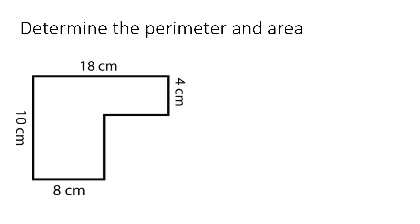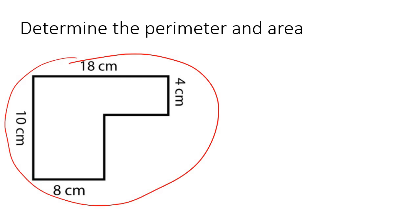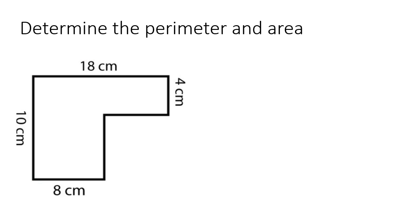Here's our next example. This one's going to be quite interesting because if you look at the shape as a whole, that is not a rectangle. So when we look at the area, things are going to get a little different. For the perimeter, remember perimeter is on the outside — so it's everything on the outside, here, here, there, and there. So that's the perimeter.